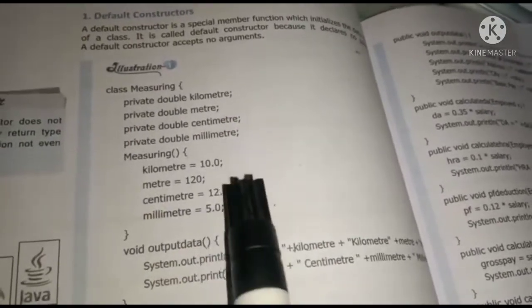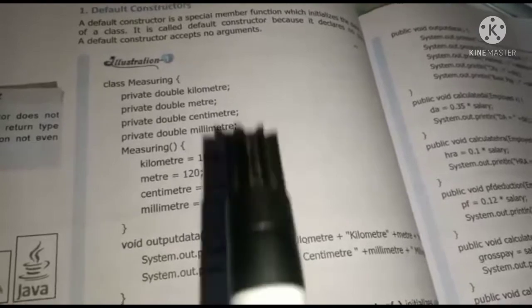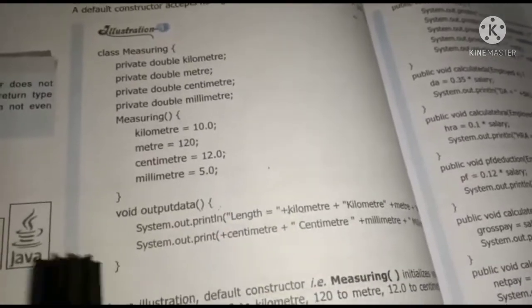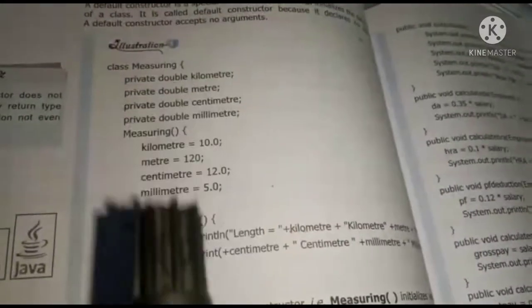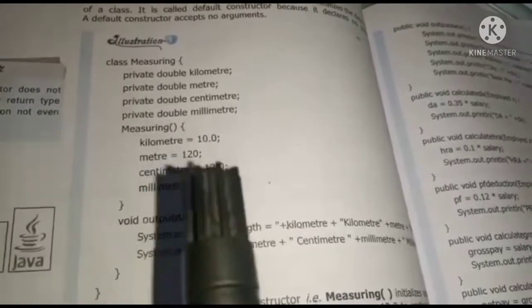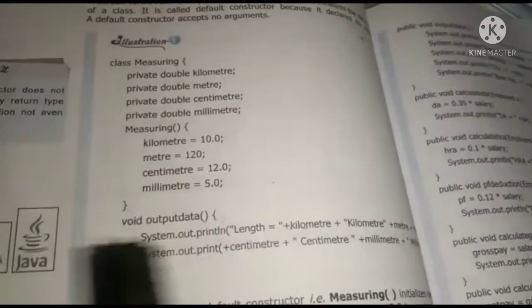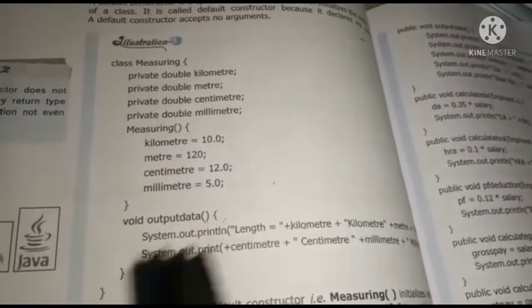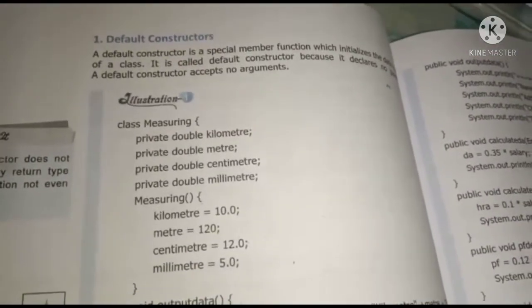Whatever value we are providing these are parameters. And execution time, when the program executes, the values we give are arguments. So you can see that we have here parameter but no argument. So it is called default constructor.